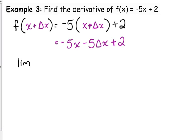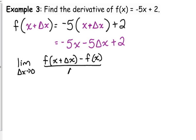You don't necessarily have to write this part, but I'm going to rewrite the general form for the limit definition of the derivative, so you know where all my pieces are coming from. The general form is: the limit as Δx approaches 0 of [f(x + Δx) − f(x)] all over Δx.